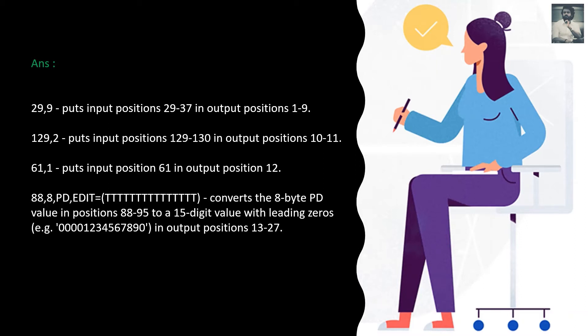So up to here we have reformatted and placed data up to the 12th position. The PD edit field starts from the 13th position and goes up to 15 digits, so it ends at position 27. Let's see the next question.